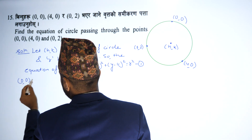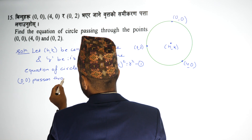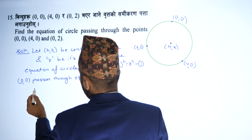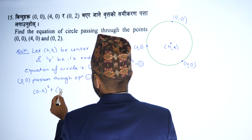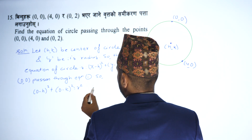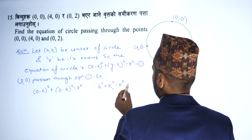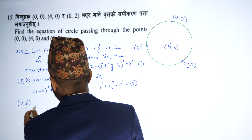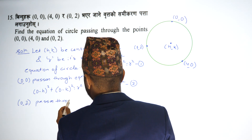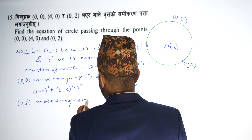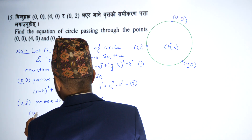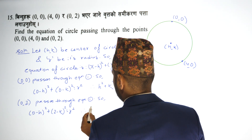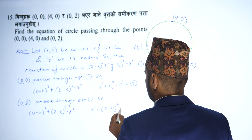Point (0,0) passes through the circle equation. So (0 minus h) squared plus (0 minus k) squared equals r squared, therefore h squared plus k squared equals r squared. Point (0,2) passes through equation 1, so (0 minus h) squared plus (2 minus k) squared equals r squared, therefore h squared plus (2 minus k) squared equals r squared.